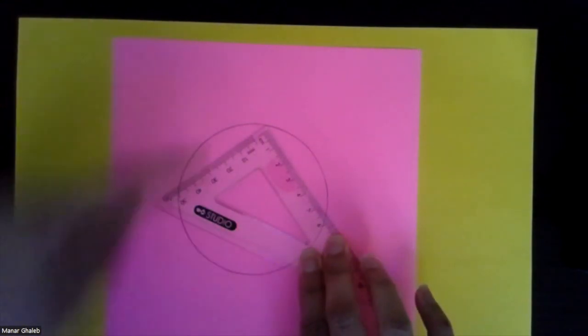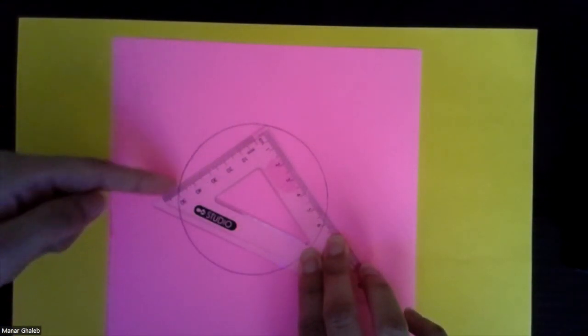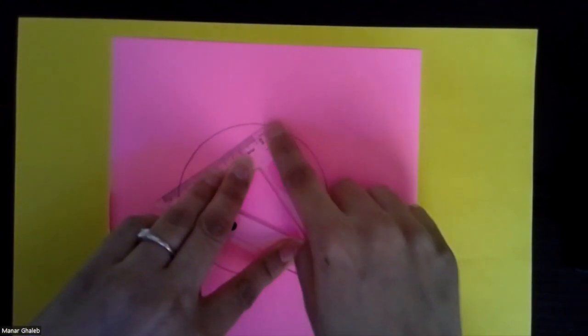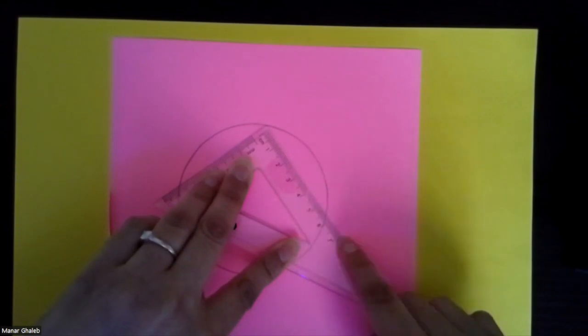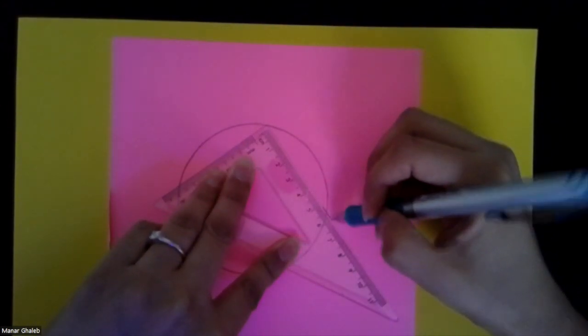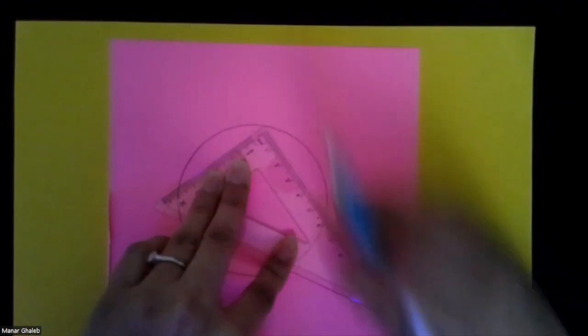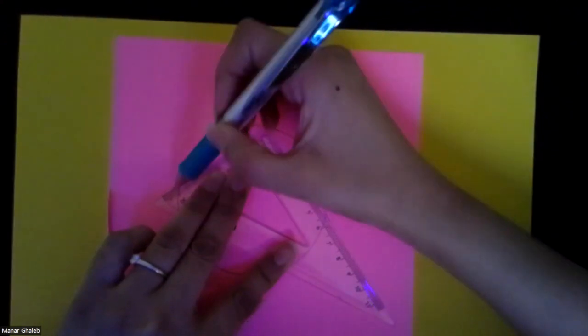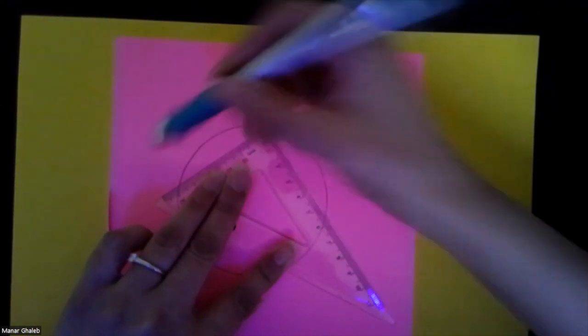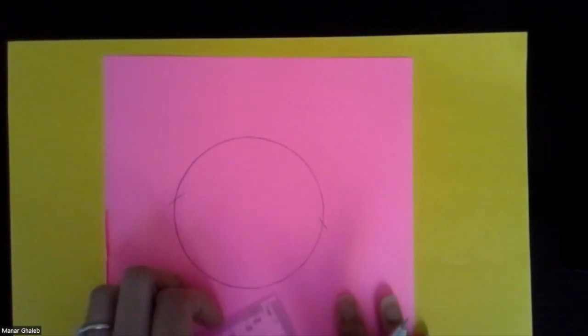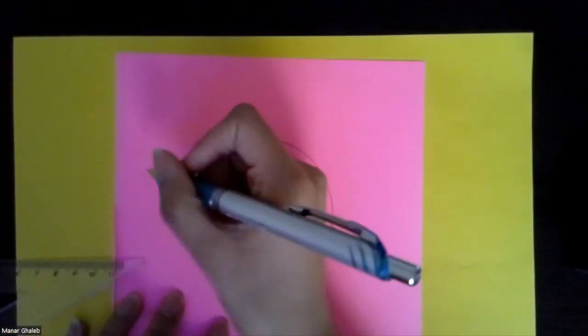Now, as a result, we have this line here that intersects a part of the circle, and we have a line here that also intersects a part of the circle. I'm going to mark these two intersections with a small line. Hold on, I moved my triangle. There we go. And here. And I'm going to give these two points a name.